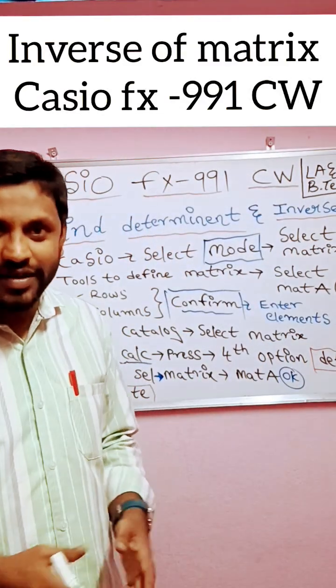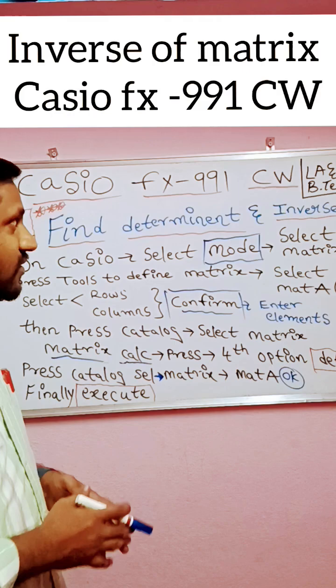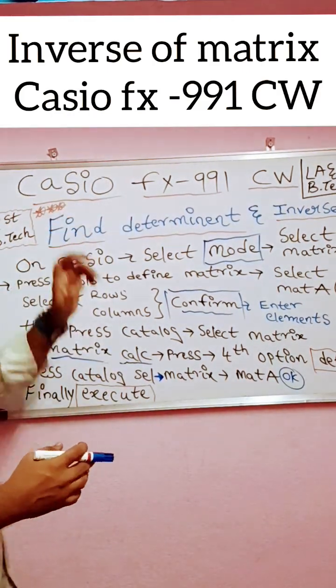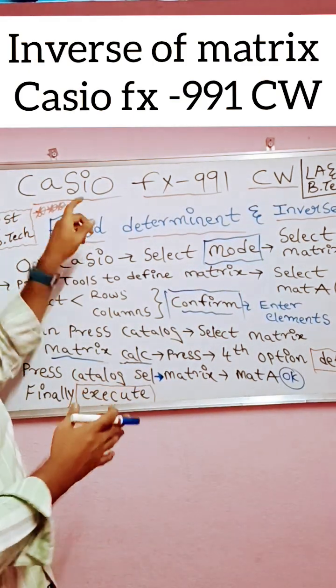Hi everyone, so today we are going to discuss a very important topic for BTech students: linear algebra and calculus. The topic is how to operate to get determinant as well as inverse of a matrix with the help of Casio model fx-991 ClassWiz CW.